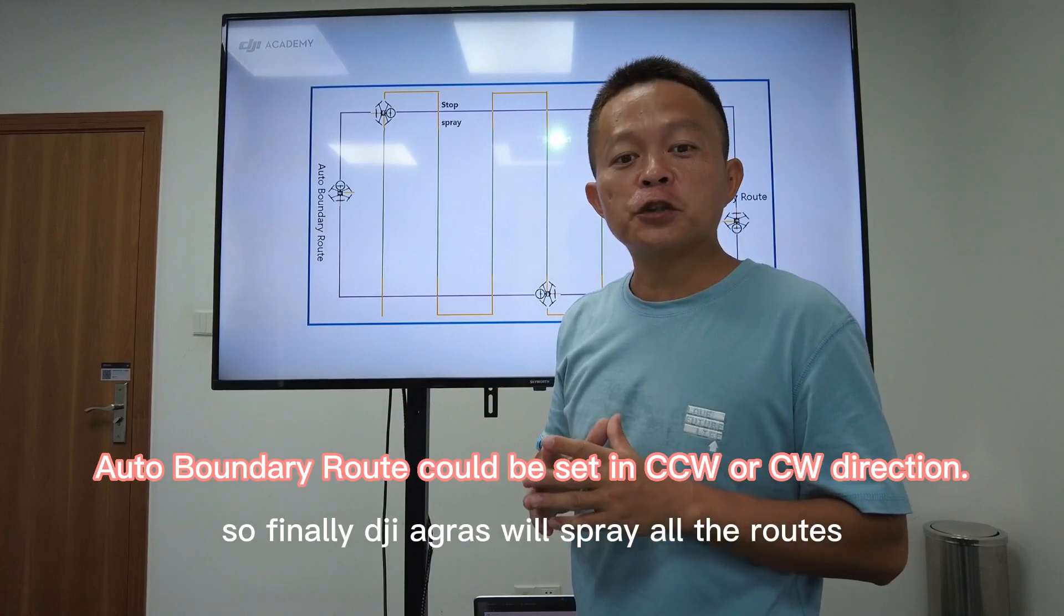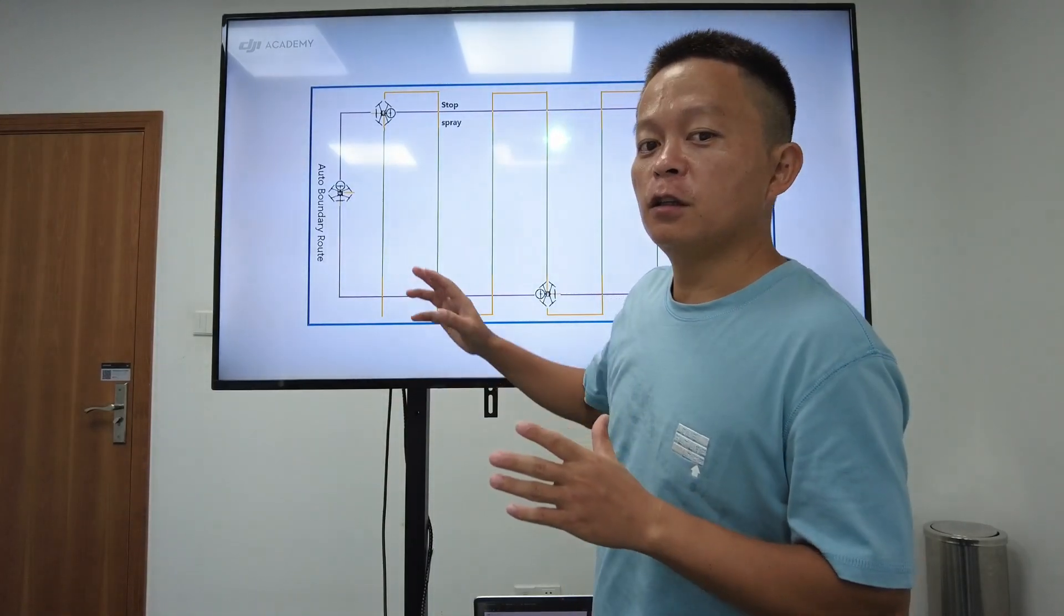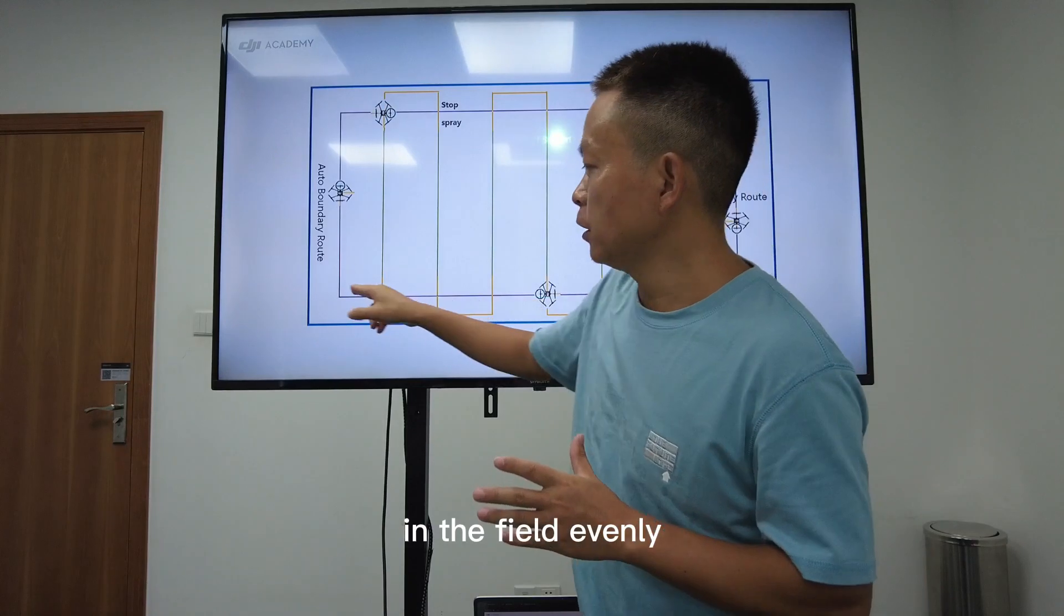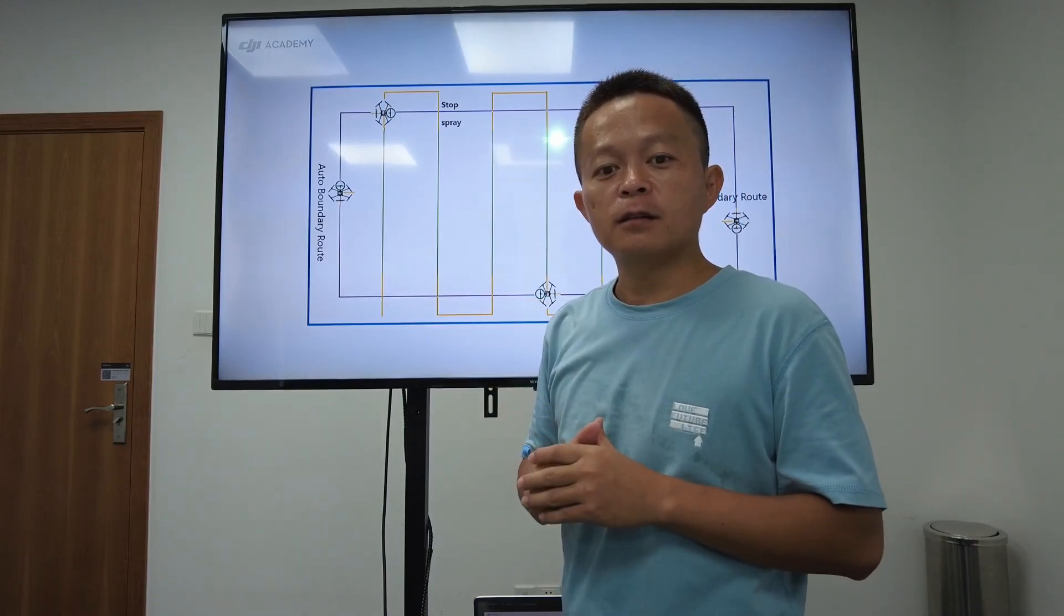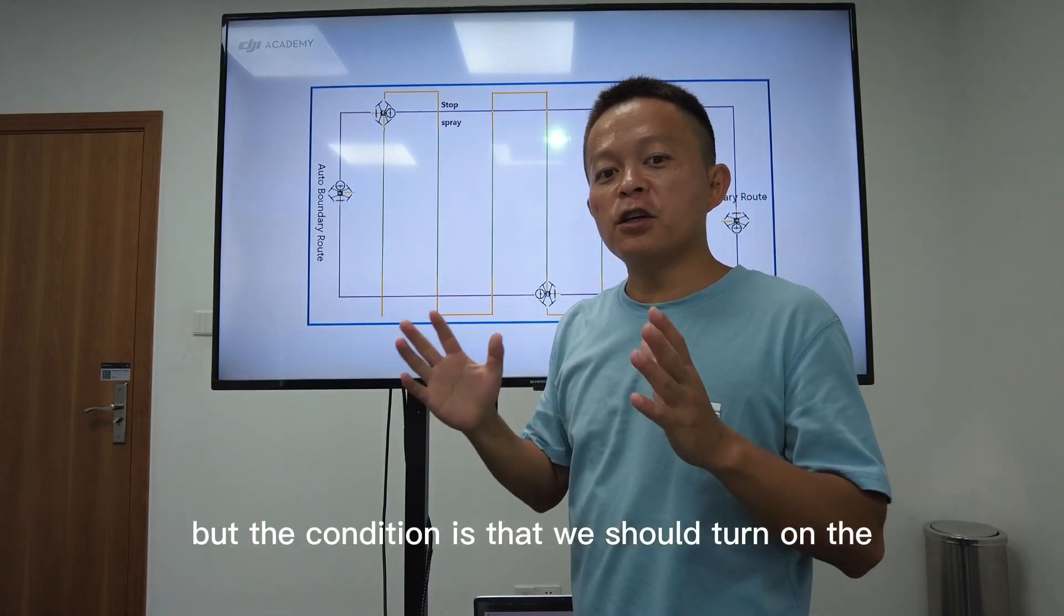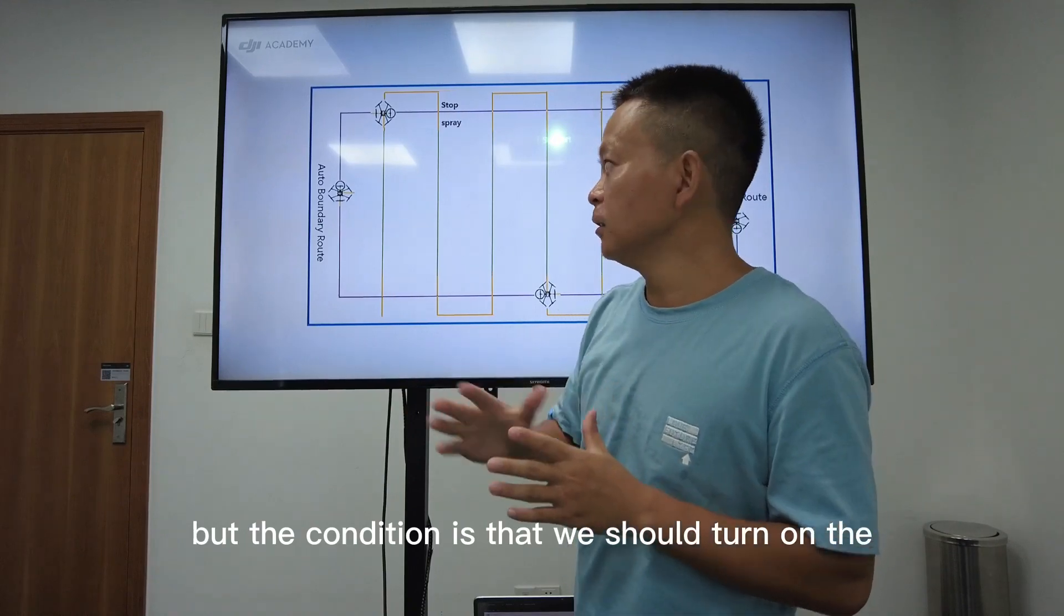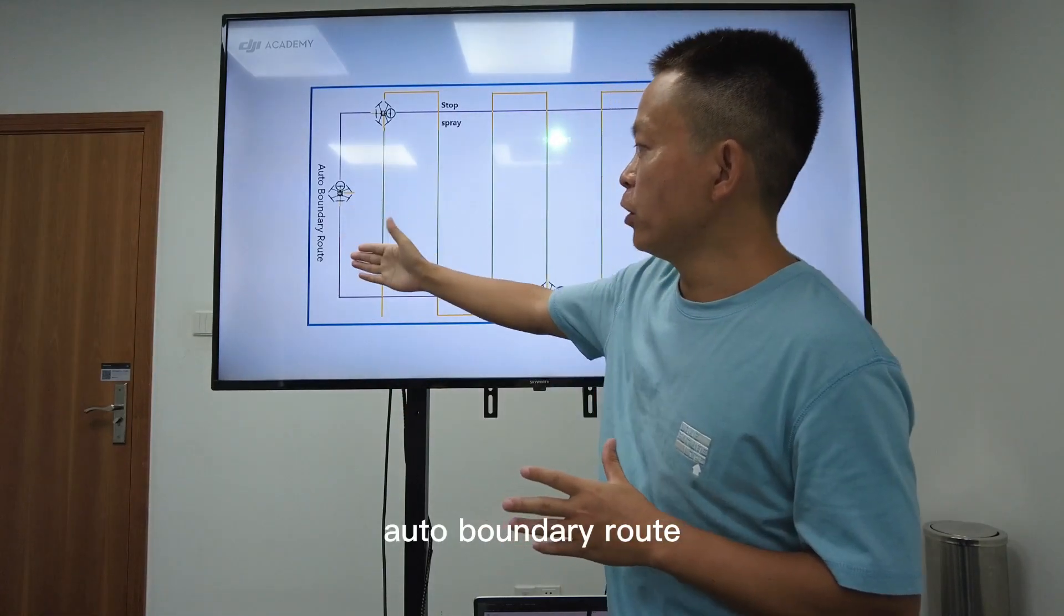So finally DJI Agras will spray all the routes in the field evenly. But the condition is that we should turn on the auto boundary route.